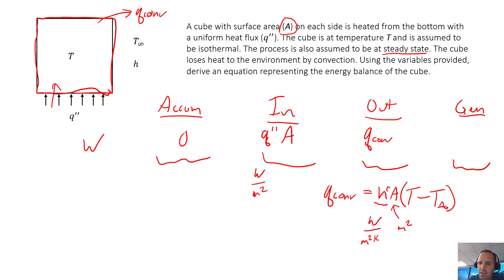So we need to multiply this by 5 to get our total area. Our out is going to be 5 times the area of one side, because we have it leaving by five sides, times h times T minus T infinity. We're not told anything about generation in this problem, so it's safe to assume that's just zero.